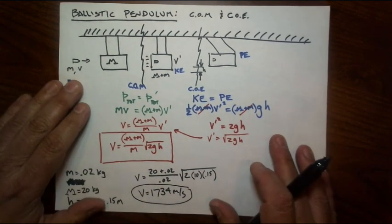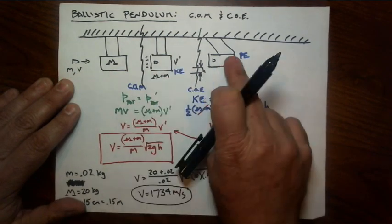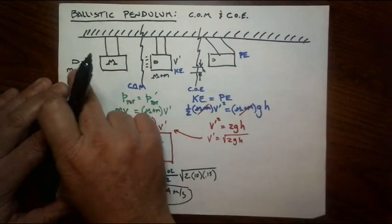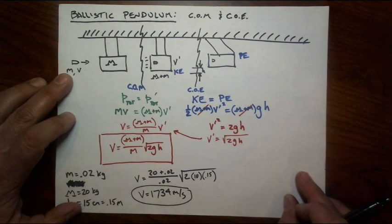This is the ballistic pendulum. Now right there is a collision that causes something to move. And that something moving goes up. And we can work backwards to find out something that was very difficult to figure out before the invention of some modern technology.